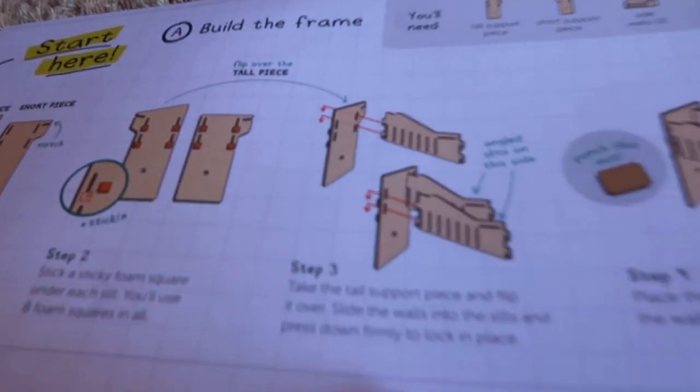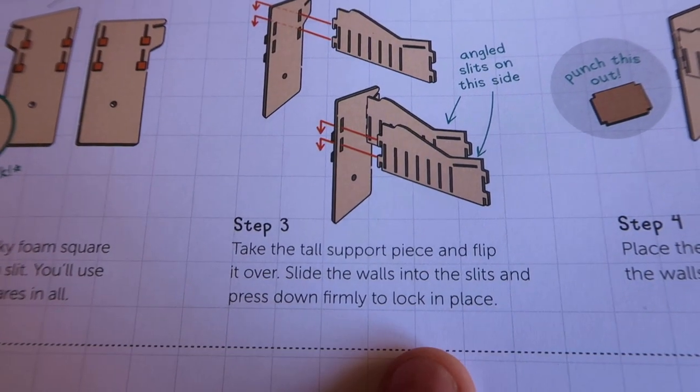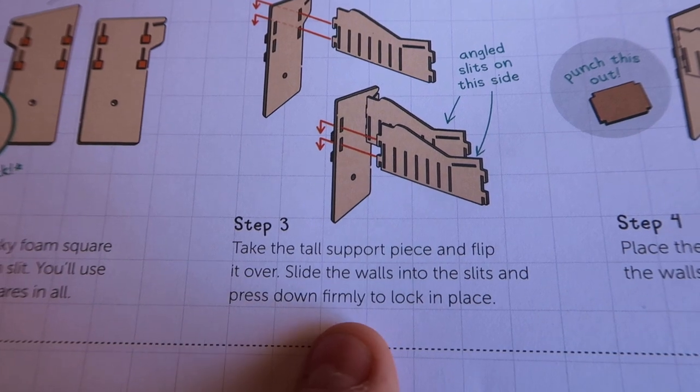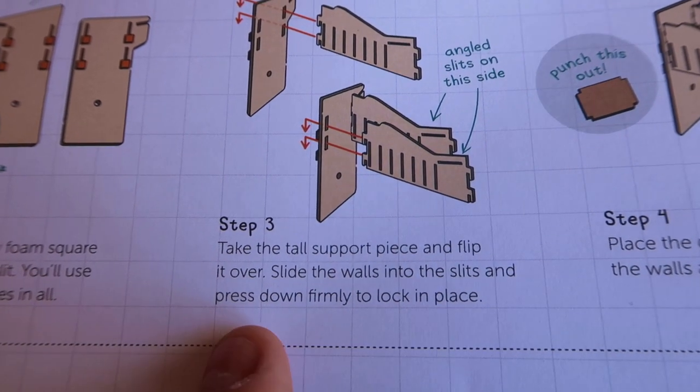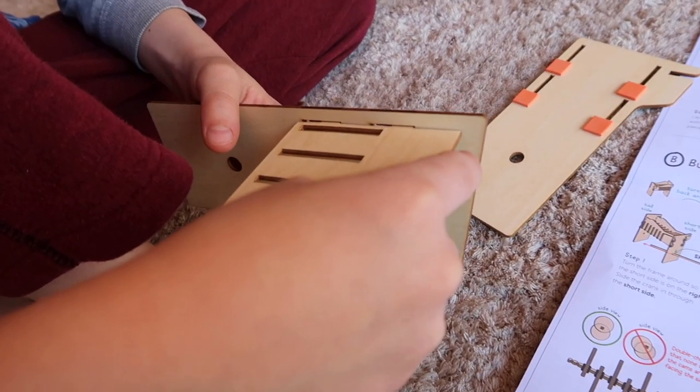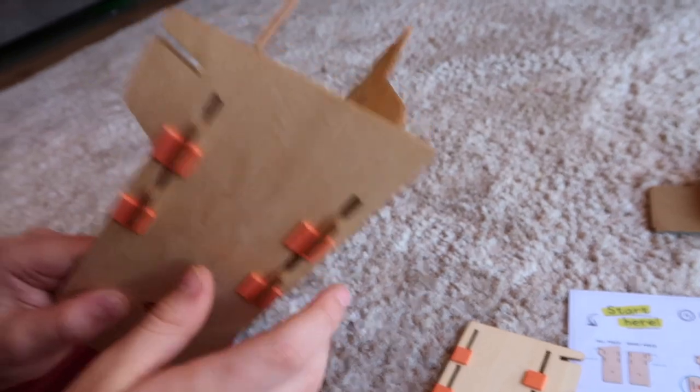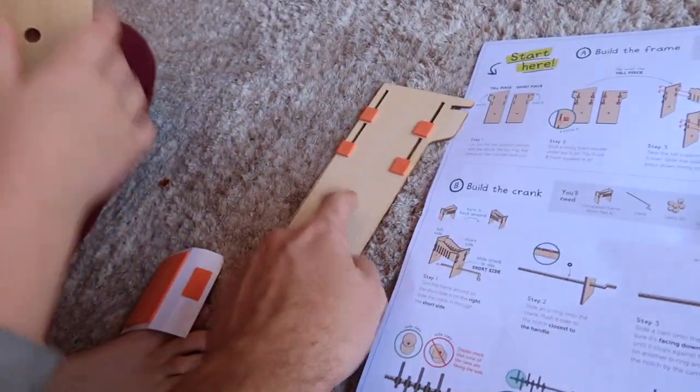Now let's take a look at the next step. Step three says take the tall support piece and flip it over. Slide the walls into the slits and press down firmly to lock in place. These little rubber pads kind of help make it tighter. Hold it there and it's not wobbling around. Okay, do it to the other side now too.